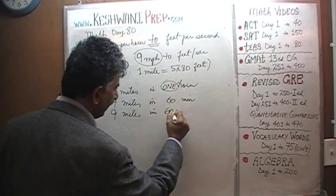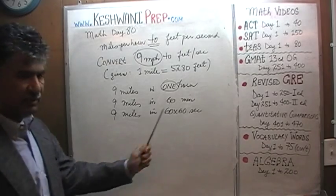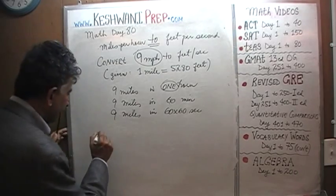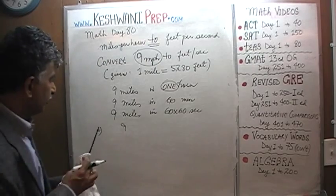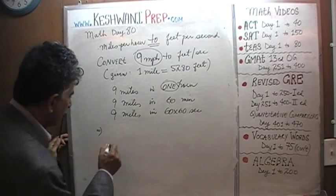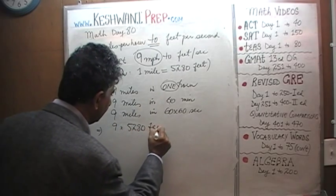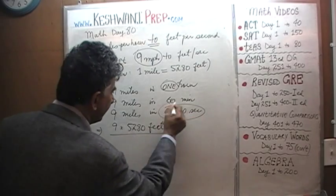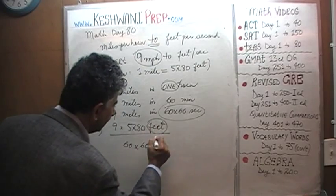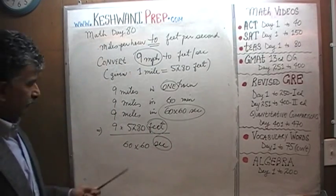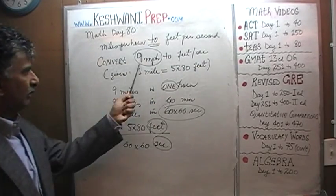60 minutes will have 60 times 60 seconds. That's it, we're almost there - 9 miles in this many seconds. That implies that if you were to divide 9... well, we should also convert it into feet. Let's convert it right here: 9 times 5,280 feet divided by this many seconds, 60 times 60 seconds. There we go, we have our feet per second. 9 times 5,280 divided by 60 times 60 is what we'll figure out.